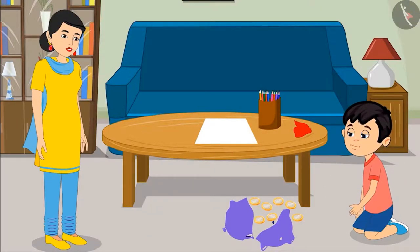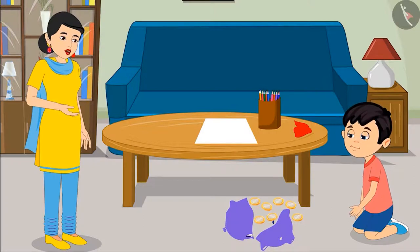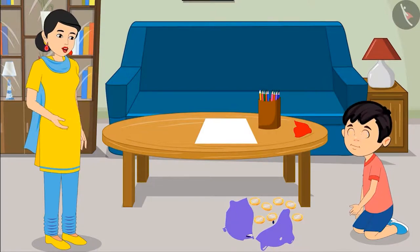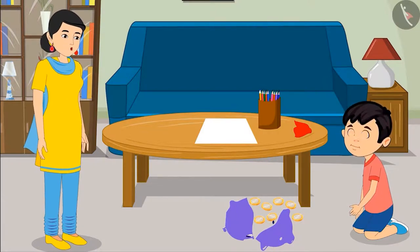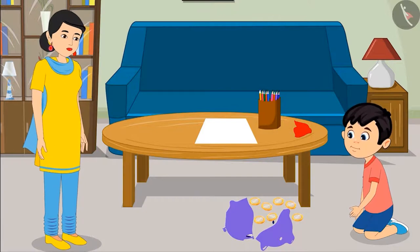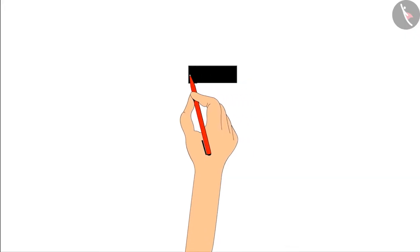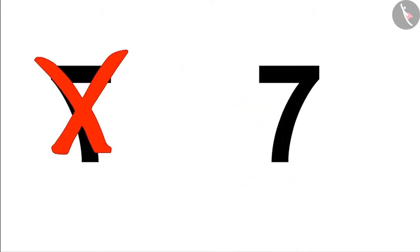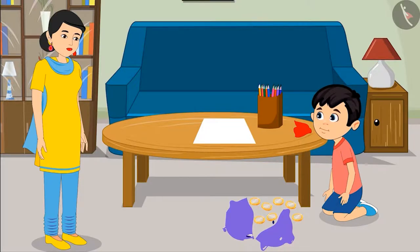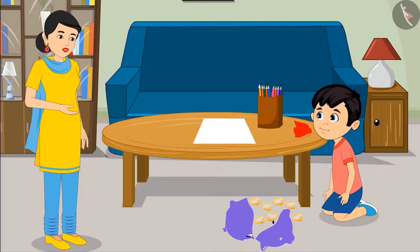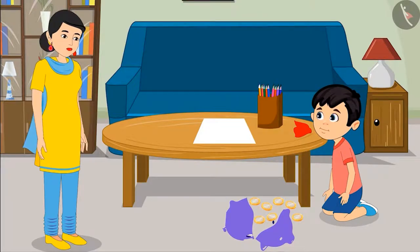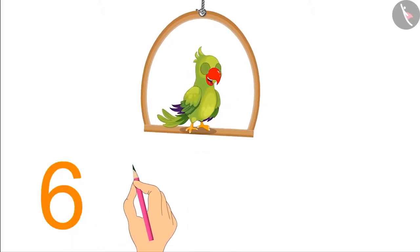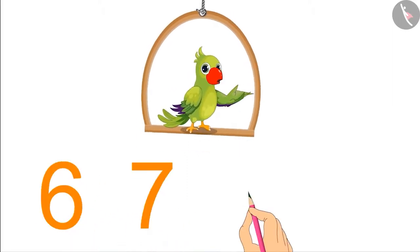The mother asks Chotu to write the number of coins on paper so he can remember how many there are. Chotu writes it, but the mother points out: 'Chotu, you have written seven in reverse. It is written correctly like this. Do you understand?' Chotu says yes.